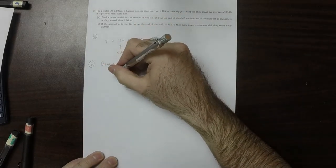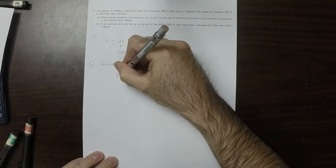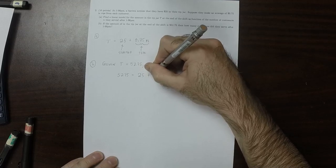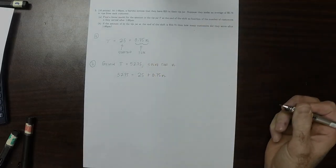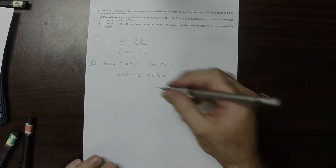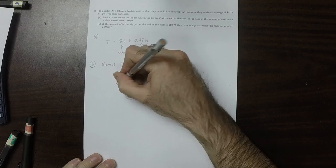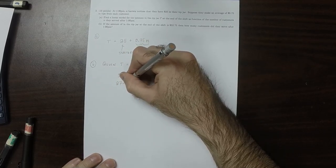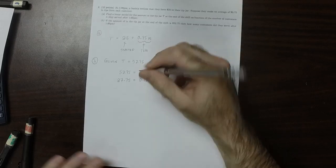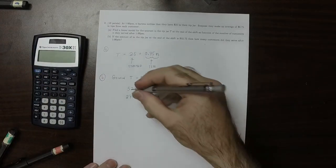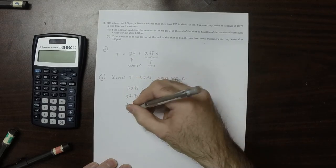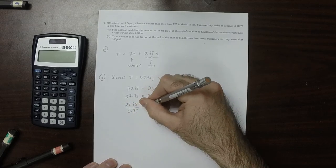So then 52.75 equals 25 plus 0.75n. If we subtract 25, that would be 27.75 equals 0.75n. So n equals 27.75 divided by 0.75.